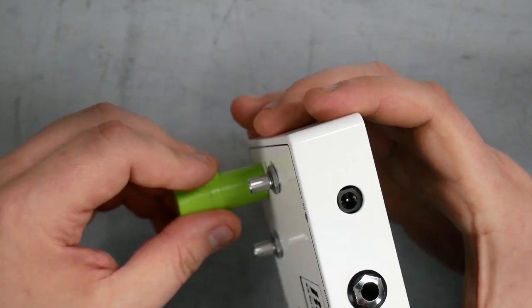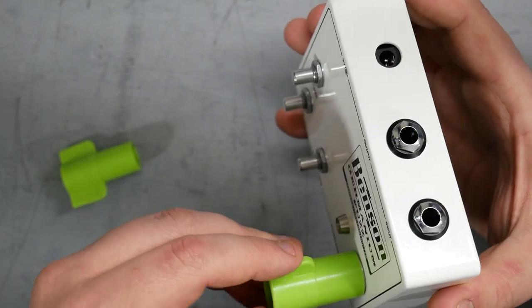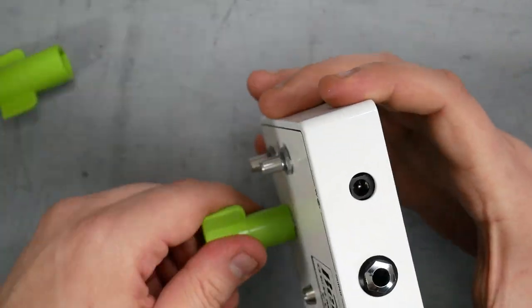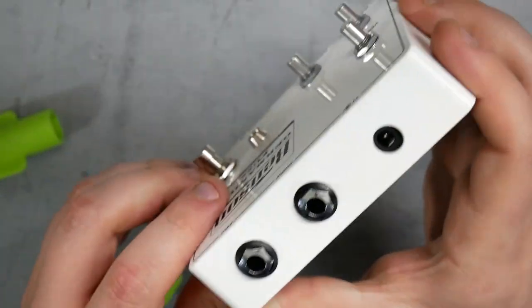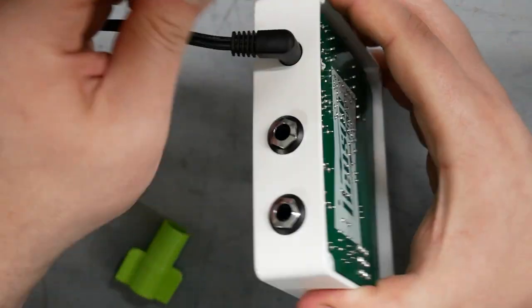None of the fasteners on pedals really have to be super tight. You never want to really wrench on them. Just snug, just so they're not going to come undone. Our nuts are tight and our DC jack is still, we can still get in there, power the pedal.